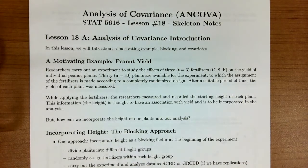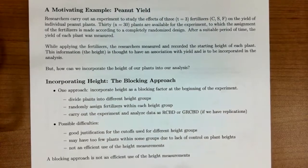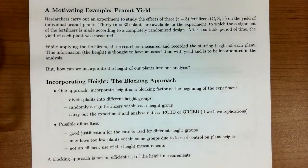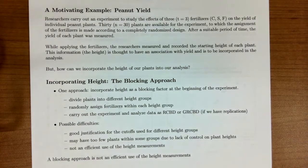Let's talk about our motivating example, which we'll be carrying throughout this entire lesson — the peanut yield example. Researchers want to carry out an experiment to study the effect of three fertilizers on the yield of individual peanut plants. 30 plants are available for this experiment, to which the assignment of the fertilizers is made according to a randomized complete design. After a suitable period of time, the yield of each of the plants is measured.